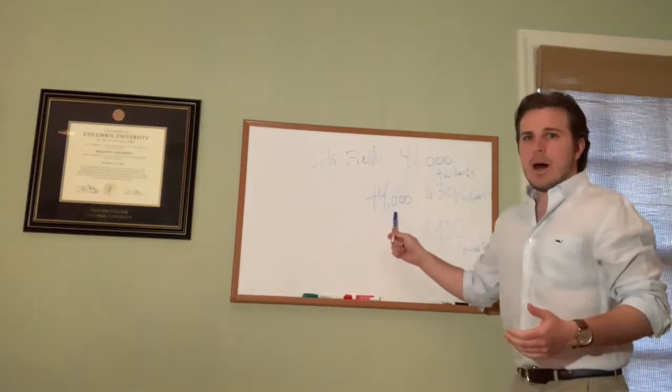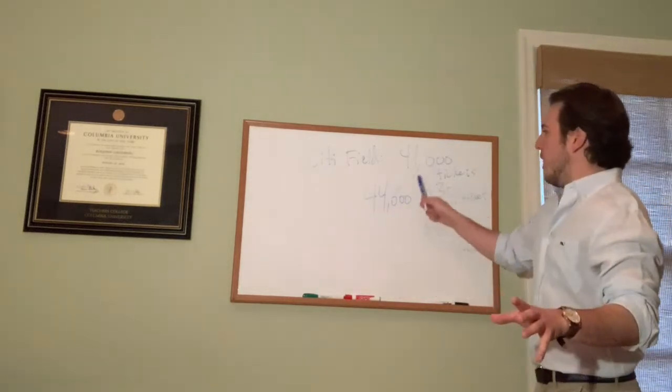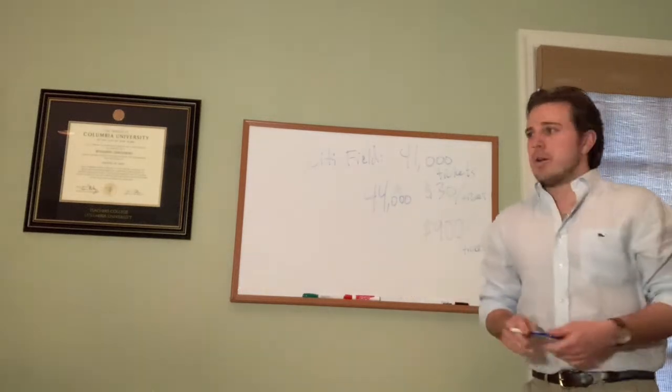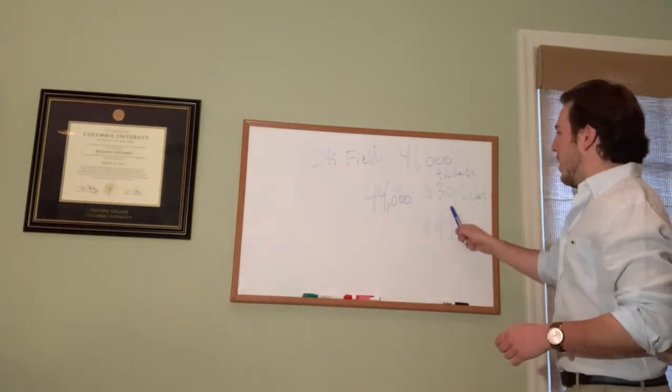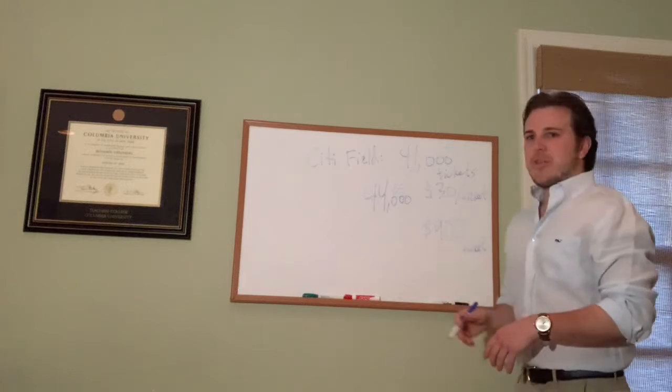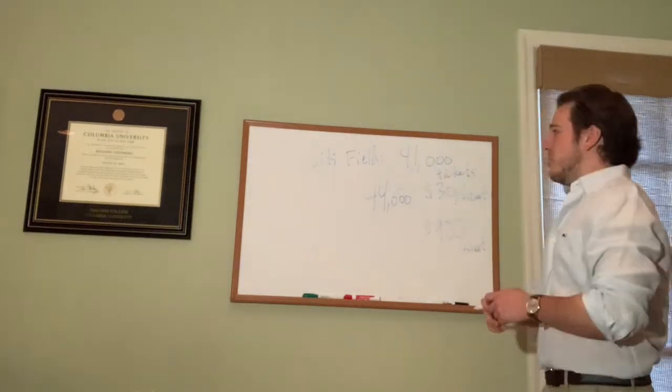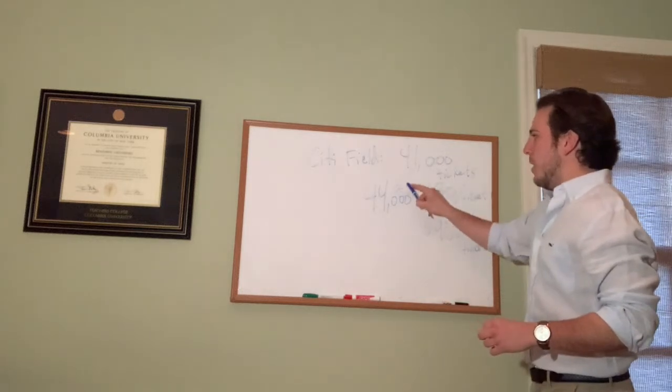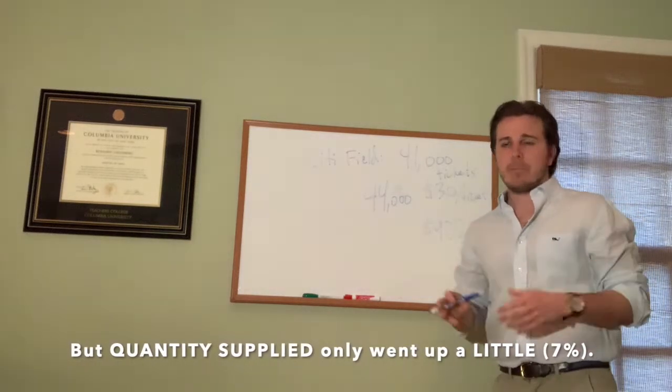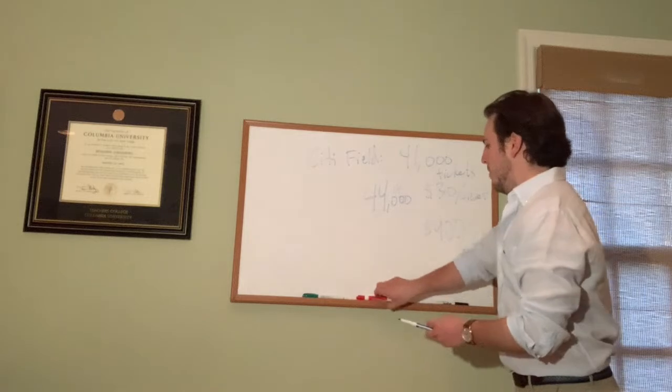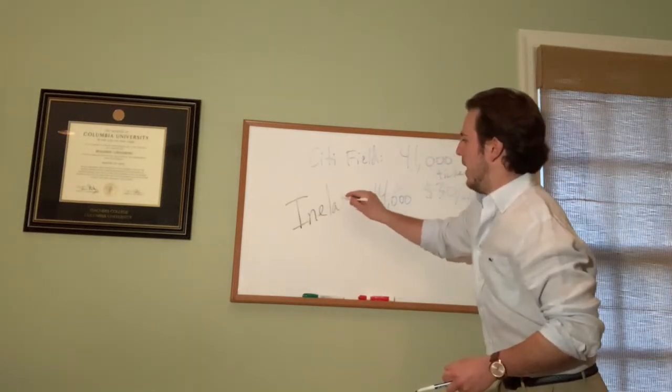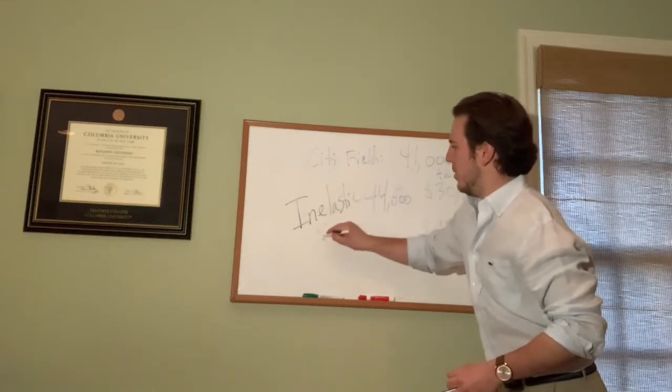So they did increase supply, but they only increased supply by about 7% or 8%. Meanwhile, the price of tickets went up by, believe it or not, about 3,000%. As you notice, the price went up by 3,000% and quantity supplied of tickets only went up by 7% or 8%. This would be an example of inelastic supply.